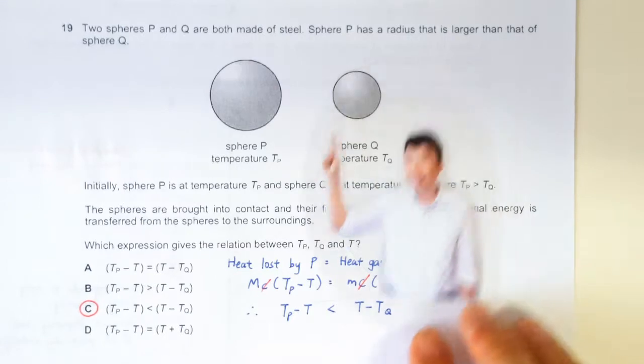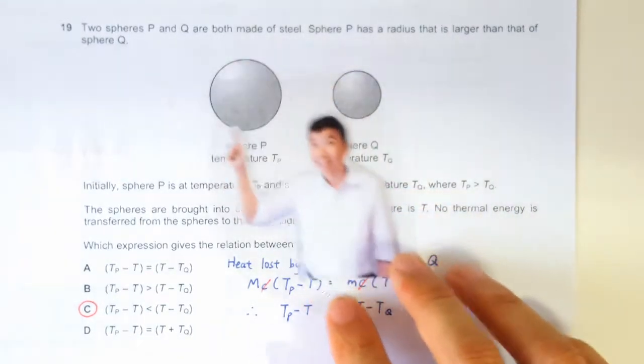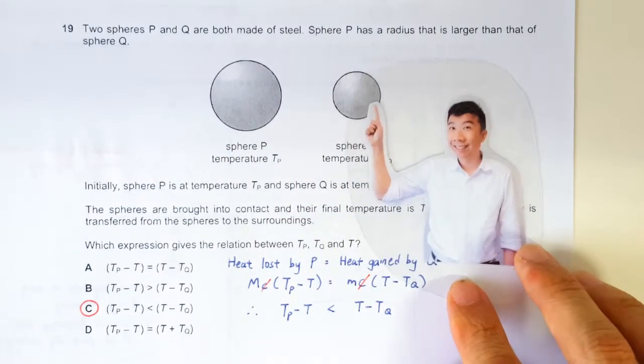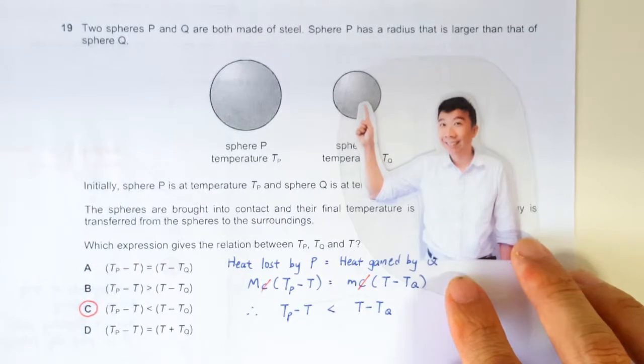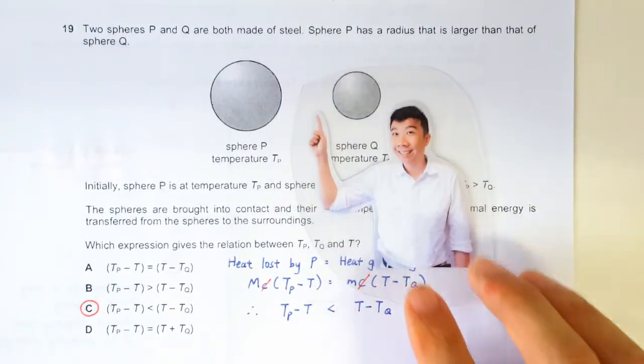Just imagine if you are mixing one big tub of water at 80 degrees Celsius and a teaspoon of water at 20 degrees Celsius. The final equilibrium temperature, surely you can see that it's going to be much closer to 80 degrees Celsius.